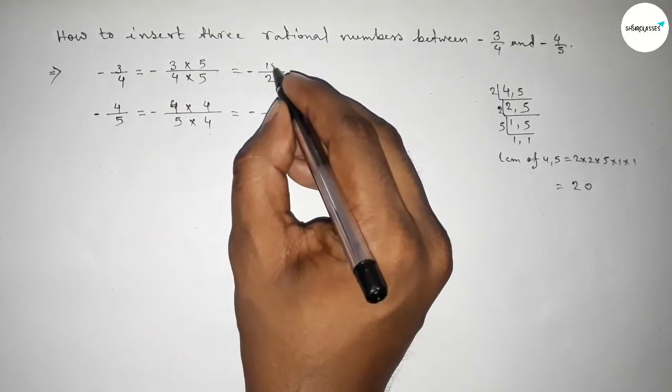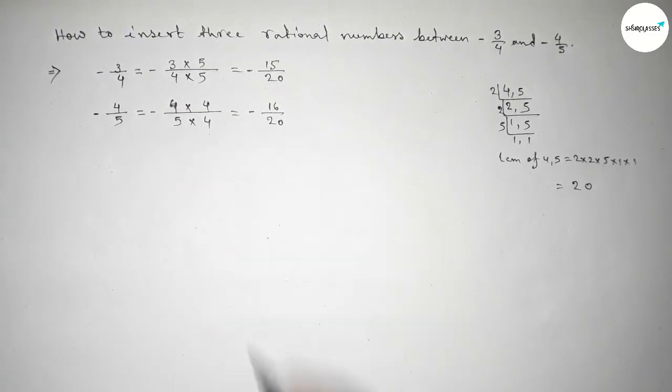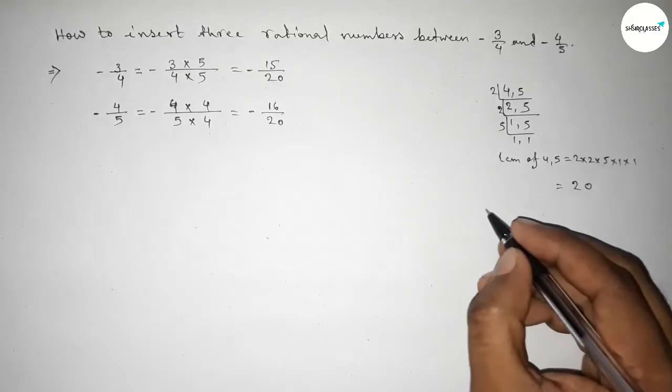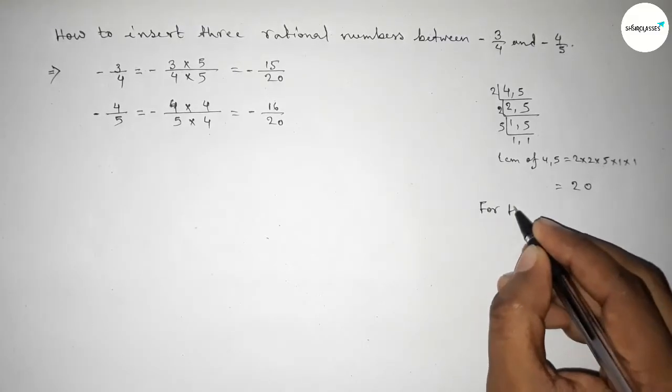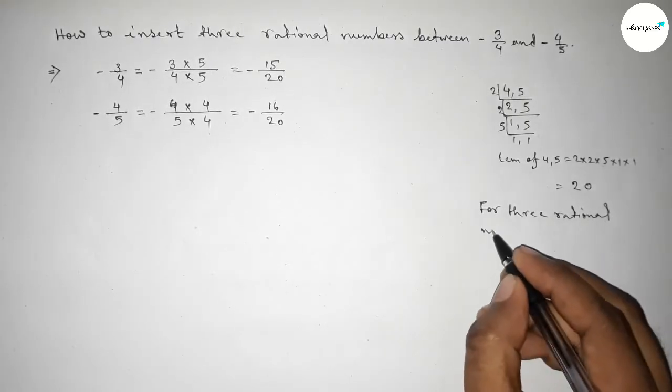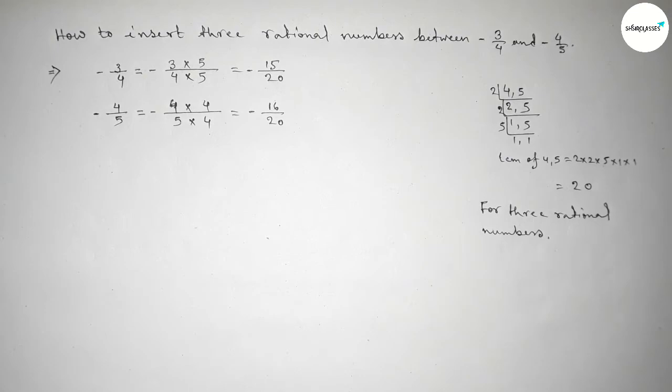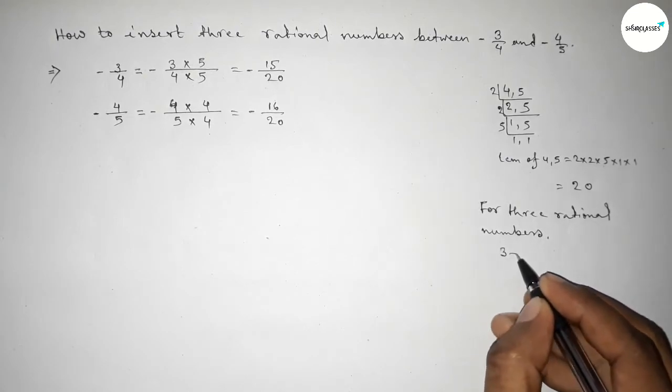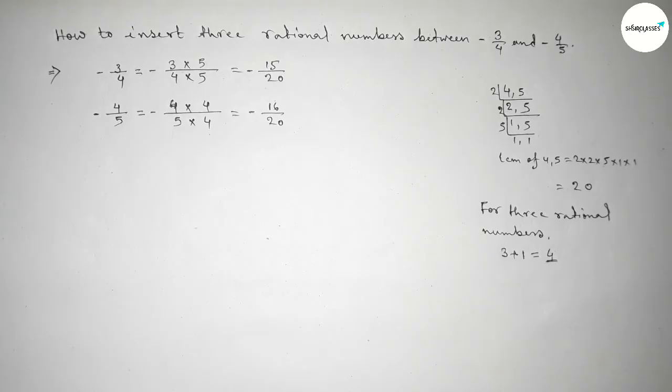Now for three rational numbers between any two numbers, we have to follow this method: we should multiply both numbers by 3+1 = 4, 4 with both numbers up and down.